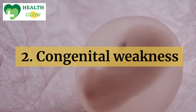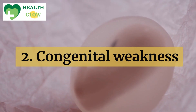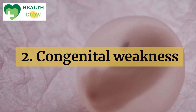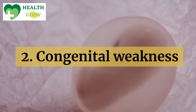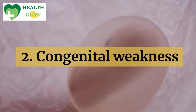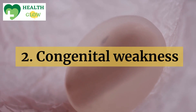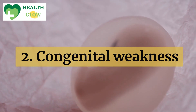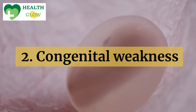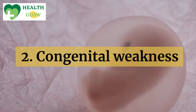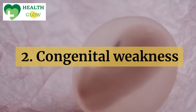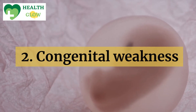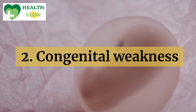Congenital weakness: Some individuals are born with a congenital weakness in certain areas of their abdominal wall or groin. These weaknesses, known as congenital or inherited hernias, can lead to hernia development from a young age or even during infancy. Inguinal hernias, which occur in the groin, are a prime example of hernias that can have congenital origins. This type of hernia is more common in males and can often be attributed to an opening that didn't fully close during fetal development.